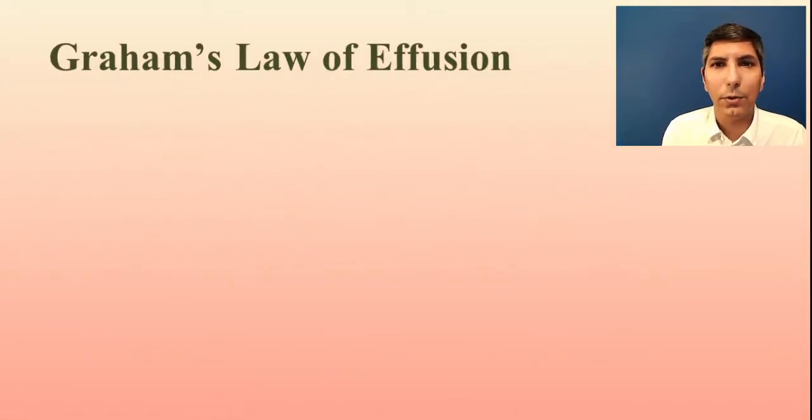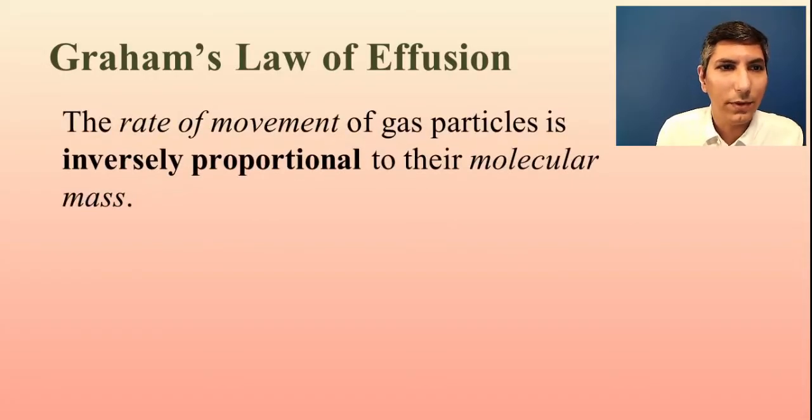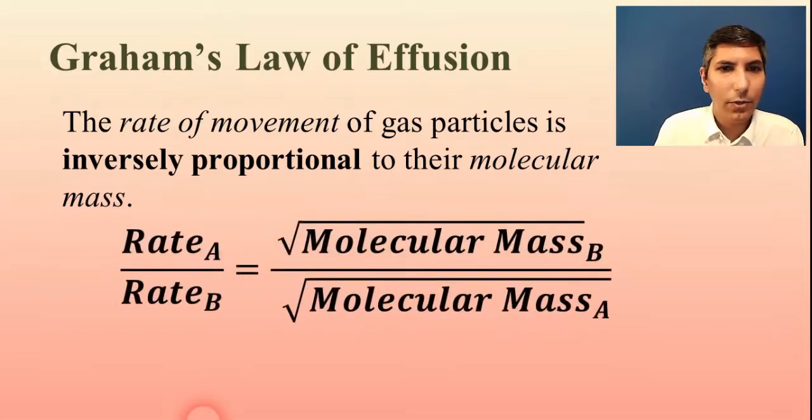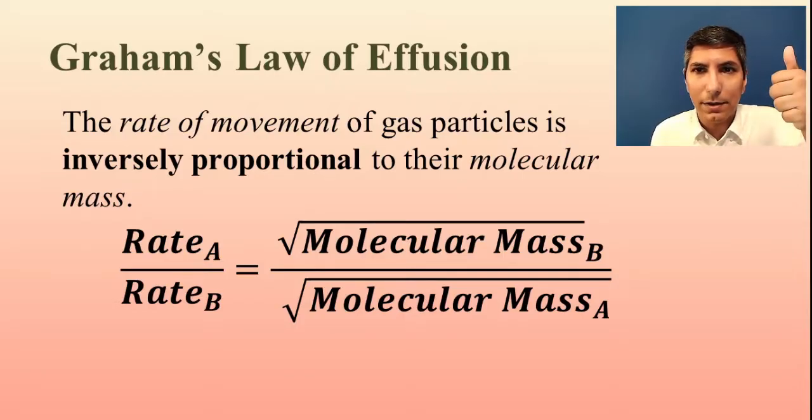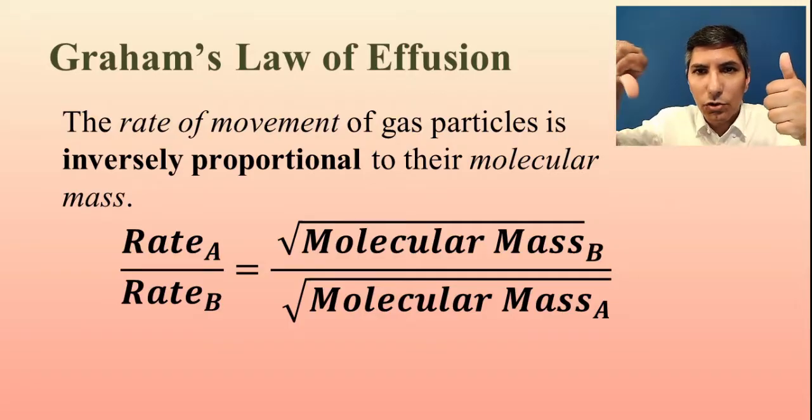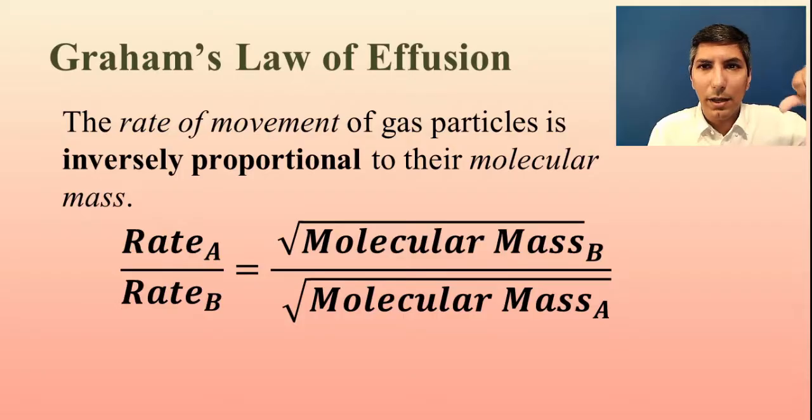So let's take a look at the relative rates of effusion of different gases. Now, there is a gas law that helps us to figure this out. This is called Graham's Law of Effusion. And Graham's Law of Effusion states that the rate of movement of gas particles is inversely proportional to their molecular mass. Now, what that means is, and this is the equation for that by the way. It looks a little bit intimidating, but it's not as bad as it looks. What this is telling us is, as the molecular mass of a gas goes up, the rate of its motion goes down. And likewise, as the molecular mass of a gas goes down, its rate of motion goes up.